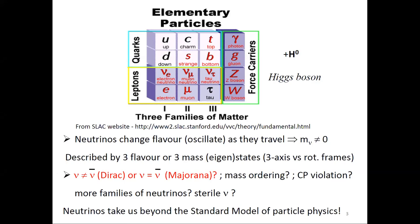In the case of leptons, the electron is negatively charged and has an antiparticle partner with positive charge, and the same goes for muon and tau particles. The neutrinos have no electric charge. They are partners of the muon — nu-mu — and the tau — nu-tau. The forces between these particles are mediated by force carriers. In the case of the strong interaction, it is the gluon.